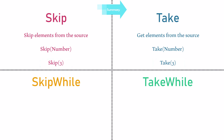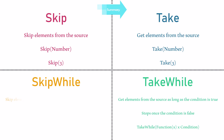TakeWhile is to get elements from the source as long as the condition is true. Once the condition is false, the next elements will not be taken — we only take elements until the condition is false. SkipWhile is to skip elements from the source as long as the condition is true. Once the condition is false, we get the next elements as output — we skip each element until the condition is false, then once the condition is false, we get the remaining elements.